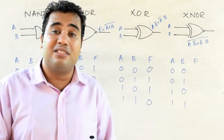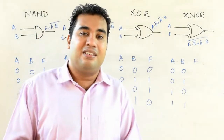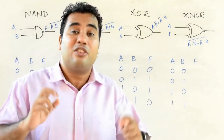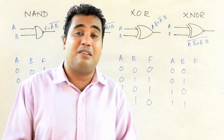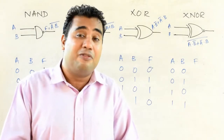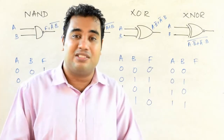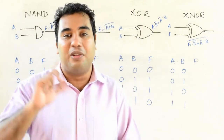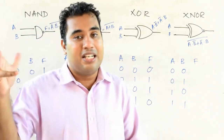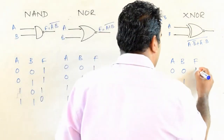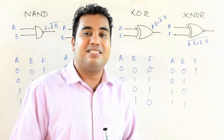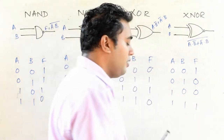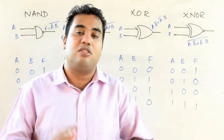For the XNOR gate, the output is 1 when the number of ones in the input is not odd — in other words, when the number of ones is even or zero. So for 0,0: no ones, output is 1. For 0,1: one '1', output is 0. For 1,0: one '1', output is 0. For 1,1: two ones, output is 1.